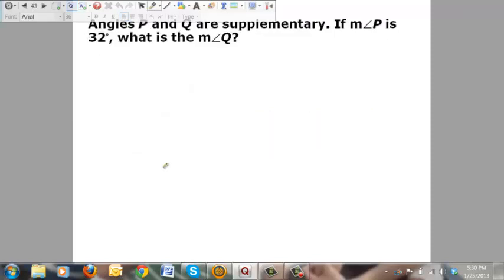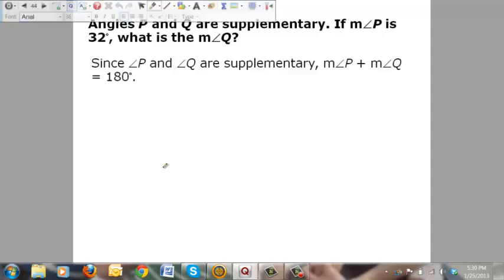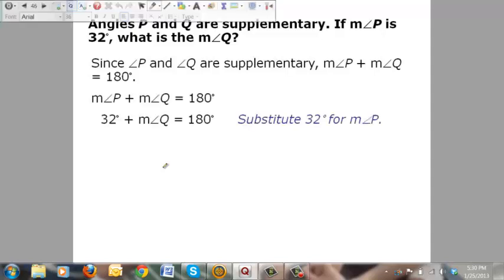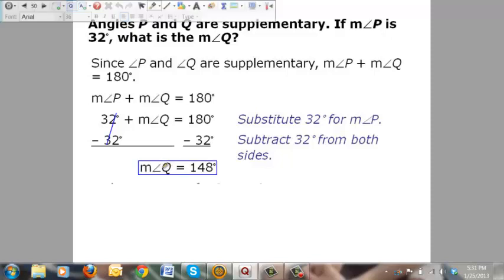Here's another one that says angles P and Q are supplementary. Since they're supplementary, how many degrees are they? 180 degrees. It also tells us that the measure of angle P is 32 degrees. So, what's the measure of angle Q? Since P and Q are supplementary, they're going to equal 180 degrees added together. We know that P is 32 degrees. So, all we have to do is subtract that 32 from both sides of the equal sign. The measure of angle Q is equal to 48 degrees. Circle or box your answer. Pretty easy stuff.